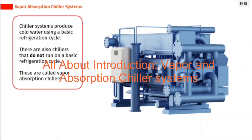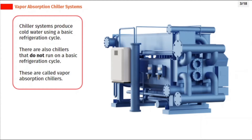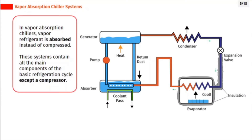Chiller systems produce cold water using a basic refrigeration cycle. There are also chillers that do not run on a basic refrigeration cycle. These are called vapor absorption chillers. In vapor absorption chillers, vapor refrigerant is absorbed instead of compressed. These systems contain all the main components of the basic refrigeration cycle other than a compressor.